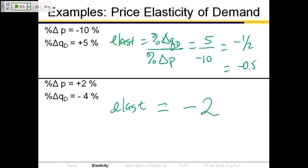The normal and inferior goods distinction only applies to income and wealth. For price, we have the law of demand, which tells us demand curves always slope downward. So we know that an increase in price always gives us a decrease in quantity demanded, and the other way around.